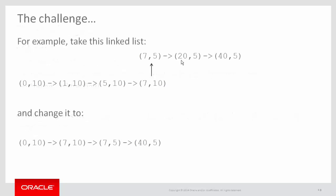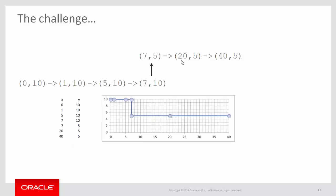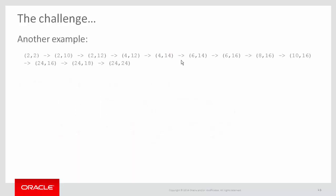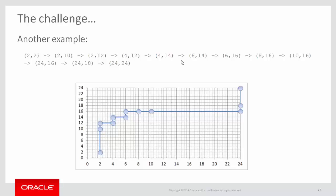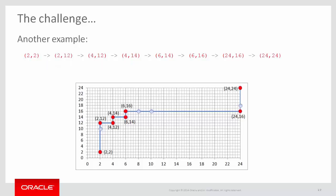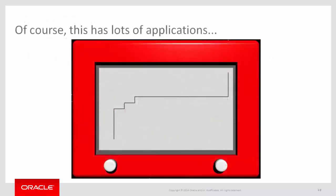Let's go back to the linked list. We want to take this linked list and change it to the one below. Let's graph this linked list so you can see what's going on. The ones in red are the points that I want to keep. Let's take another, slightly larger example — here's that list on a graph. This has lots of applications. You might recognize a familiar Etch A Sketch toy here. Basically, I want the corners on the sketch — places where the child has changed direction and decided to turn the other knob.